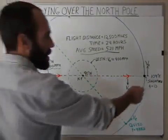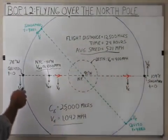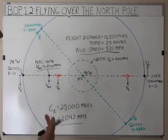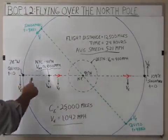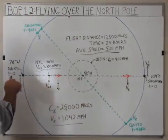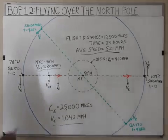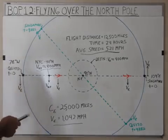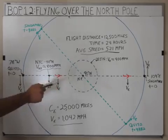Singapore is at 104 degrees east of the Prime Meridian and Quito is about 78 degrees west. That's 182 degrees between them, but I'm showing a straight line here — we're just going to assume that they're 180 degrees away from each other. The runway at Quito actually faces almost due north, so we can say that the pilot is going to start off and fly directly at the North Pole.